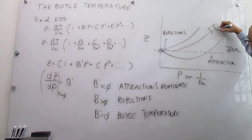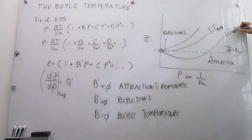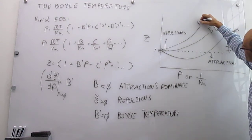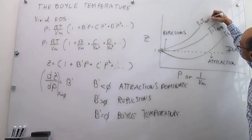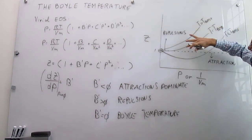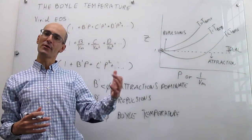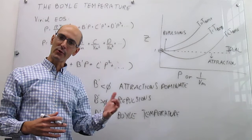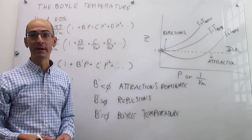Here T equals T_Boyle, and there will be a temperature less than T_Boyle and a temperature higher than the Boyle temperature. These are three limiting cases for graphs of compression factor versus pressure or inverse molar volume, and how those depend on temperature.